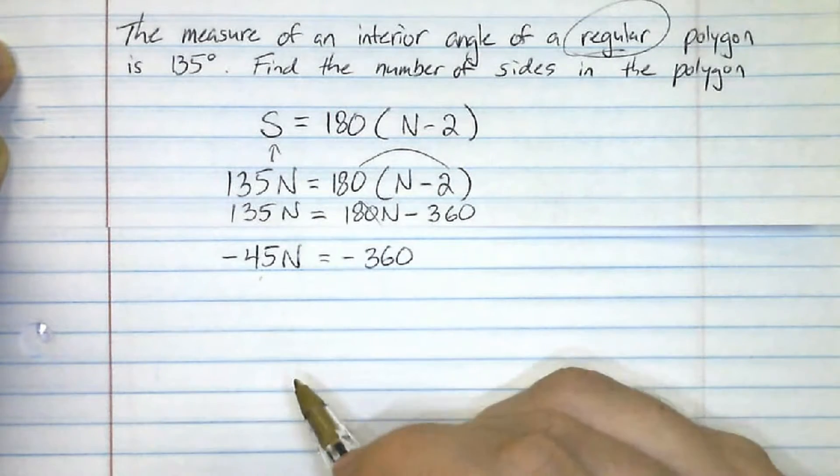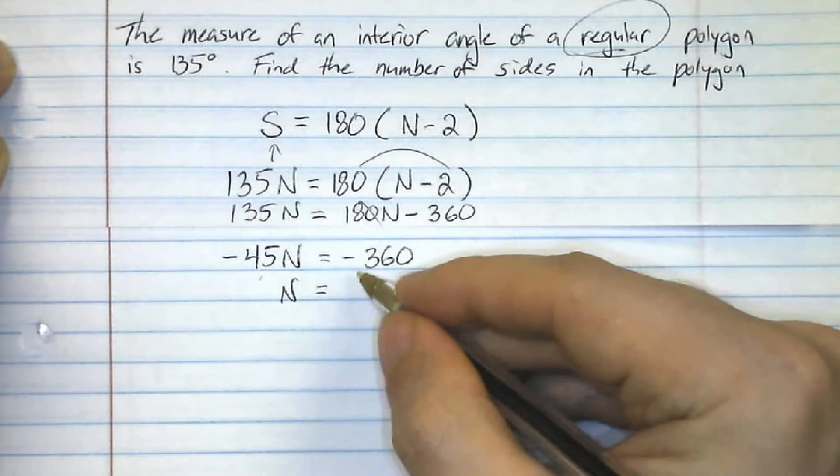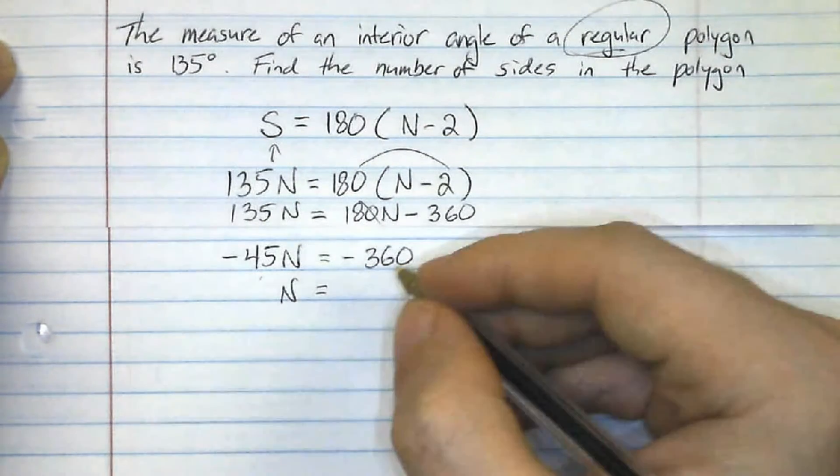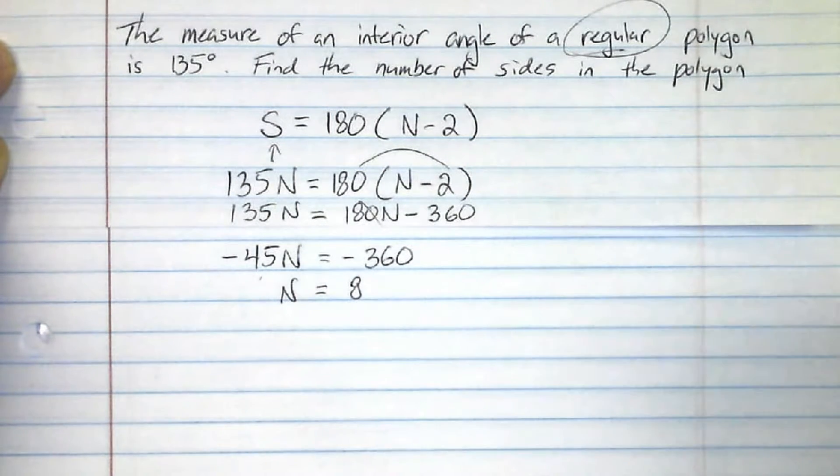Now I divide both sides by negative 45. And by doing that, I get N equals, remember negative divided by negative is positive, and 360 divided by 45 is 8. So now I know that there are eight sides to this polygon.